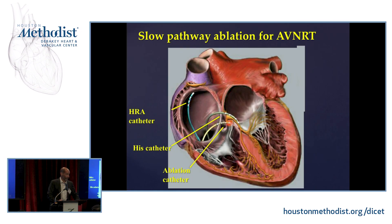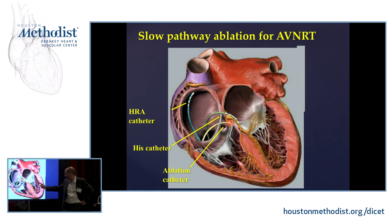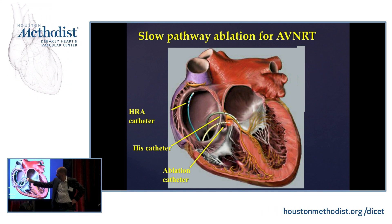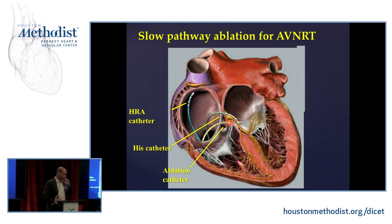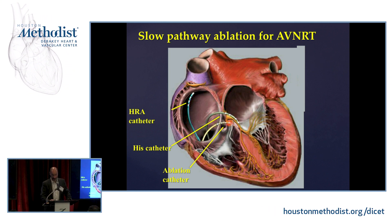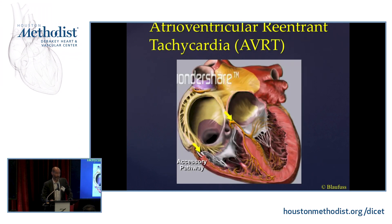This is how we ablate it. We put catheters so we can recognize where the compact AV node is, because we can record a His bundle signal next to it, and we ablate below. In most patients, that's easy. In some patients it gets tough because the slow pathway and the fast pathway can be very close, so there is a one to two percent risk of AV block when we ablate this slow pathway.